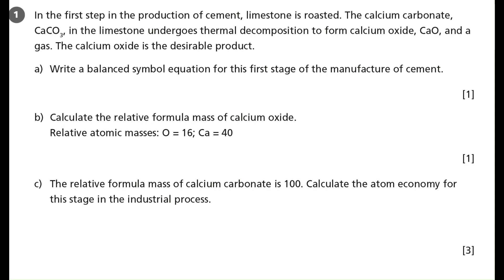In the first step in the production of cement, limestone is roasted. The calcium carbonate with the formula CaCO3 in the limestone undergoes thermal decomposition to form calcium oxide with the formula CaO and a gas. The calcium oxide is the desirable product.